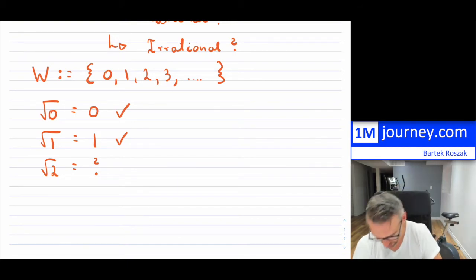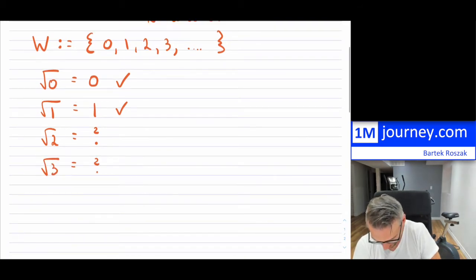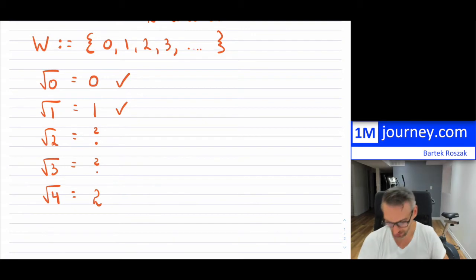But I just want to keep going and then show you kind of a pattern that emerges. So then 3, again, we kind of are unsure, and then we get to 4. And now we know that the square root of 4 is 2. Again, we're just taking positive. So we're noticing a pattern here.